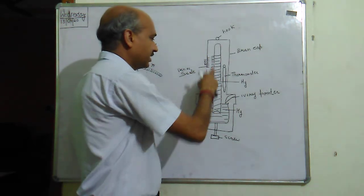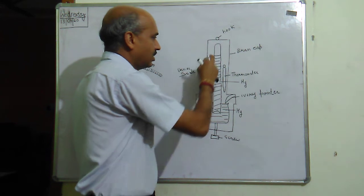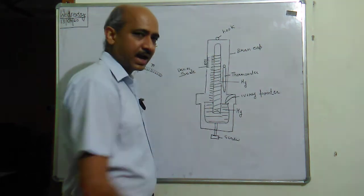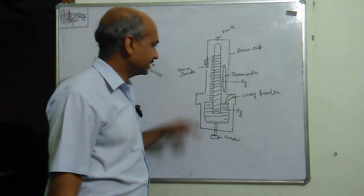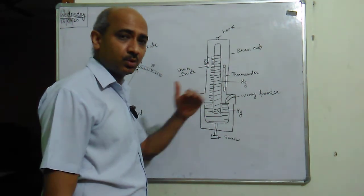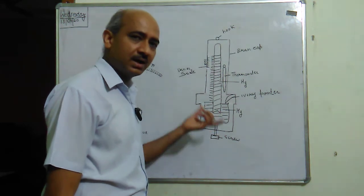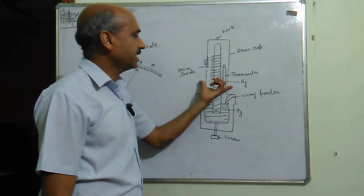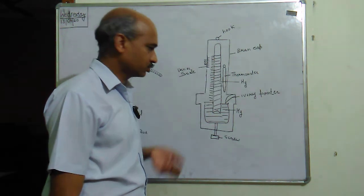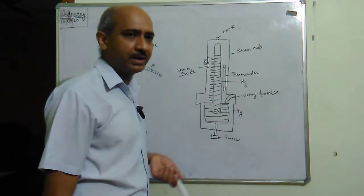We are using two scales here: this is the vernier scale and this is your main scale. So readings will be more accurate. That means in this case we can take the reading up to two decimal places. Earlier the reading was up to only one decimal place, but here we are getting readings up to two decimal places because we have added the vernier scale.